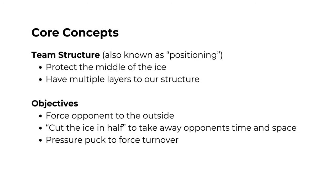The core concepts of forechecking start with our team structure, also referred to as our positioning. There are two key concepts: the first is to protect the middle of the ice, and the second is to have multiple layers of our defenders. We use these concepts to achieve our objectives: one, to force the opponent to the outside; two, to cut the ice in half in order to take away our opponent's time and space; and three, to pressure the puck to force a turnover.